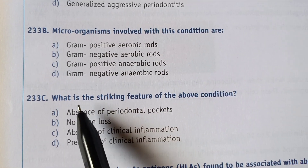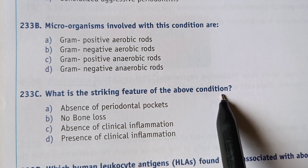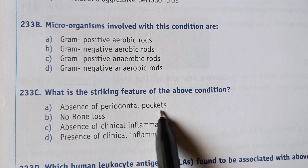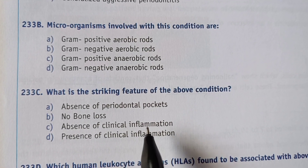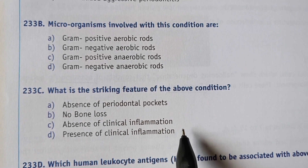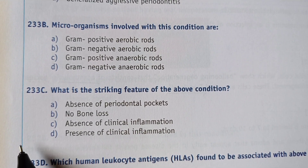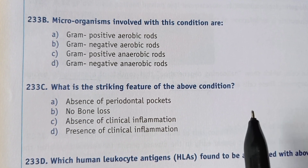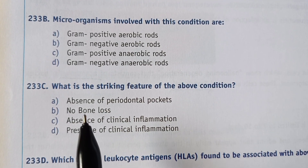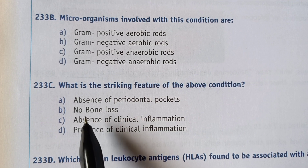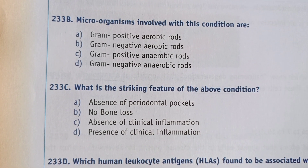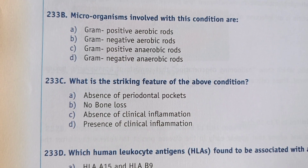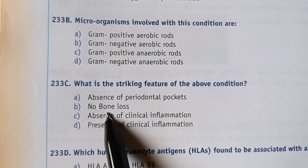Next question: what is the striking feature of localized aggressive periodontitis? Options are: A) absence of periodontal pocket, B) no bone loss, C) absence of clinical inflammation, D) presence of clinical inflammation. The right answer is option C — absence of clinical inflammation. In LAP, there is absence of clinical inflammation despite the presence of deep periodontal pockets and advanced bone loss. This is the striking feature of LAP.